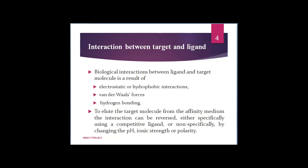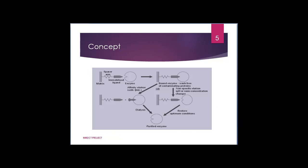The technique requires that the material to be isolated is capable of binding reversibly to a specific ligand attached to insoluble matrices. Under the correct experimental conditions, when a complex mixture containing the specific compound to be purified is added to immobilized ligand packed in a conventional chromatographic column, only that compound will bind to the ligand, and all other compounds will be washed away. The compound is subsequently recovered by displacement from the ligand, as shown in figure 1.